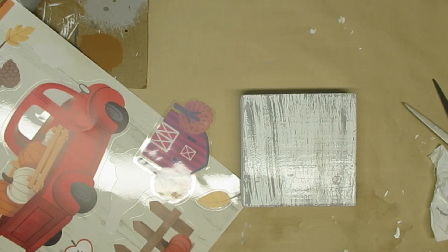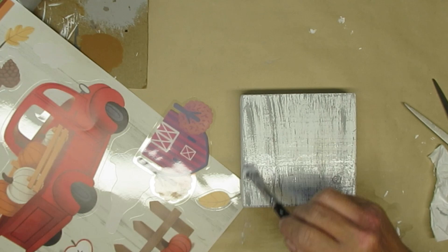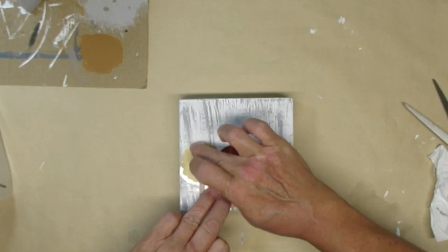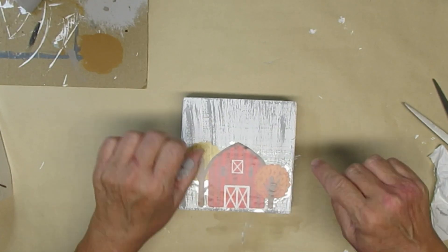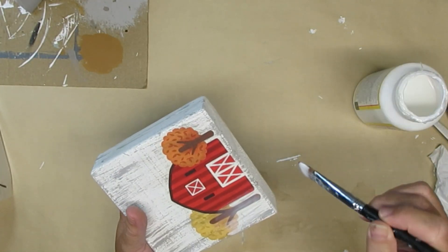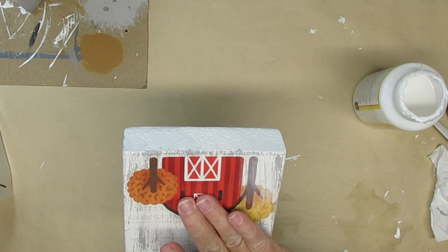For this block I'm just using Mod Podge instead of a glue stick. I wanted to make sure that this is going to stick down really well. When I do place it down then I'm going to go over the whole block again with more Mod Podge and set it aside to dry.